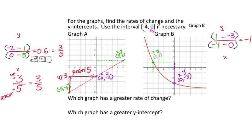Which graph has the greater rate of change? Three-fifths or 0.6 for graph A versus negative 1 for graph B. Ignoring negatives, graph B at 1 is greater than 0.6, so graph B has the greater rate of change. For y-intercepts: graph B has (0, -3) and graph A has (0, -2). Negative 2 is higher than negative 3, so graph A has the greater y-intercept.